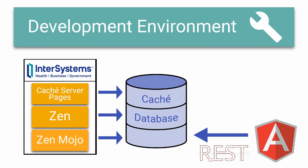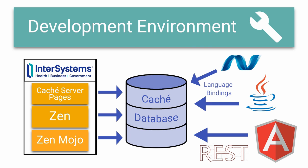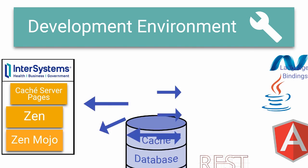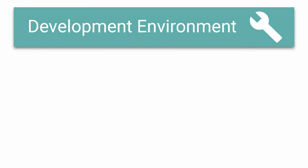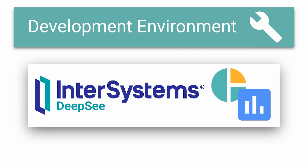Additionally, they can use third-party technologies such as Java and .NET to utilize Cache's language bindings for object and relational access. Finally, Cache provides support for business intelligence and analytics with DeepC, one of its embedded technologies.